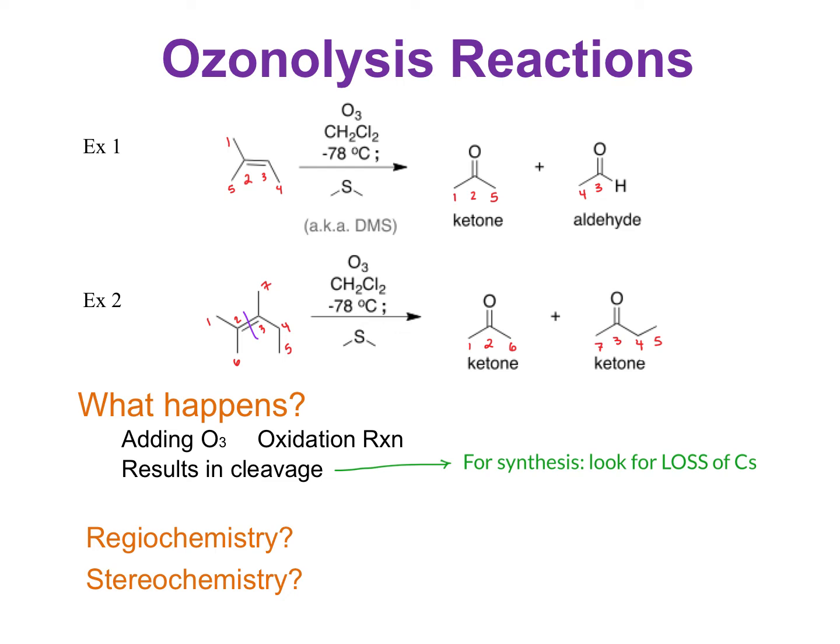Cleavage means it cuts it and that's how we're losing the carbons. One piece we'll usually throw away and then one piece we would keep, usually the part with the more carbons. It's always going to form a carbonyl type of functional group. In this case we have the ketone or aldehyde that we can form. It can also form some other carbonyl compounds like carboxylic acids, but you use a different thing at the end instead of the DMS to get that kind of product.